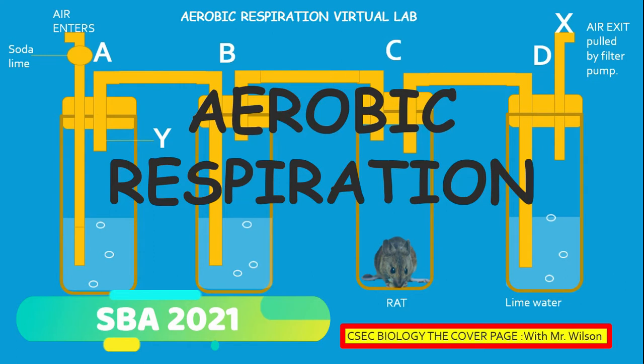The procedure for the experiment: you are going to get yourself a rat from a laboratory. You're going to set up the apparatus as shown, labeled A, B, C, D. As soon as that is done, your pump is going to be set at a rate of 1 to 3 bubbles per second and it will be turned on at once. You are going to ensure that the setup is done properly and you're going to be observing for changes in the jars.